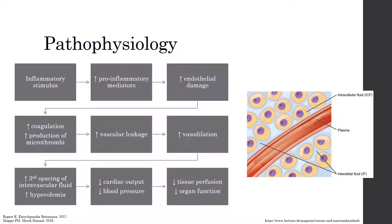The initial increase in coagulation factors can cause difficulty for blood to flow through the vessels, and in order to get around the clots, vascular leakage begins to occur. In addition, vasodilation starts, which leads to third spacing of intravascular fluid. This means that fluid from the intravascular space moves to the interstitial space between cells, causing edema and hypovolemia, or decreased blood volume. As a result, cardiac output and blood pressure decrease, and eventually there is decreased perfusion to vital organs and end organ dysfunction. Because of the decreased blood supply to organs, sepsis is otherwise known as a type of distributive shock.